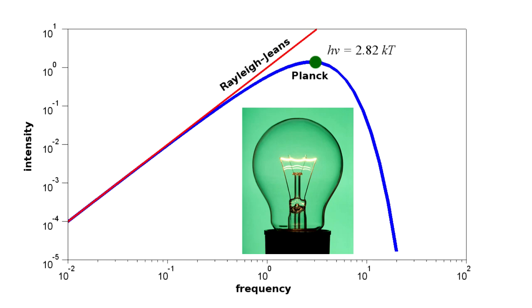The classical prediction is that radiation intensity will always increase with frequency. Planck was able to derive a radiation law that matches what is observed. Intensity reaches a peak at a certain frequency and then rapidly drops off at higher frequencies.